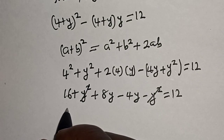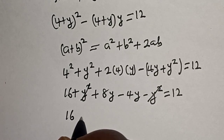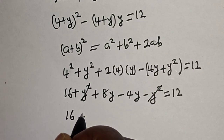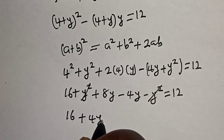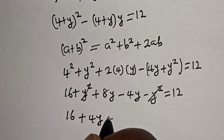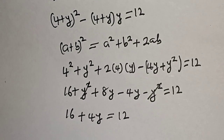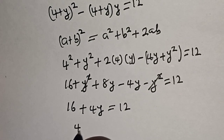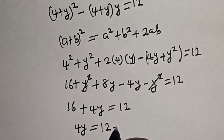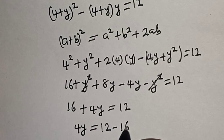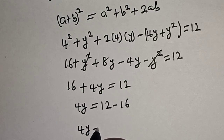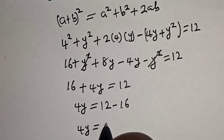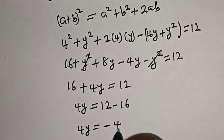We have 16 plus 8y minus 4y, which gives 4y, equal to 12. So 4y is equal to 12 minus 16, that is 4y is equal to minus 4.